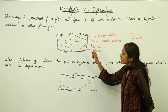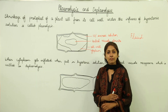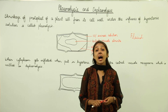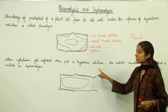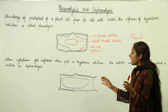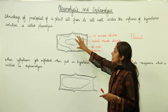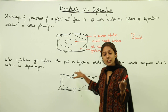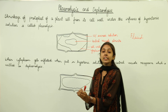You can perform this experiment by taking a freshly cut leaf of hydrilla. Take that hydrilla leaf and put it into two solutions — one is a hypertonic solution such as sucrose solution, and one is simply water. When you place the leaf into water, the cytoplasm gets inflated and distended, and the central vacuole reappears. When you put the same section of the leaf into water, the central vacuole appears again and the cell is in a fully distended state.